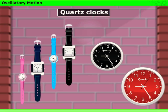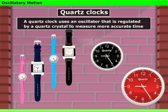Nowadays, most clocks or watches have an electric circuit with one or more cells. These are called quartz clocks. A quartz clock uses an oscillator that is regulated by a quartz crystal to measure more accurate time than mechanical clocks.